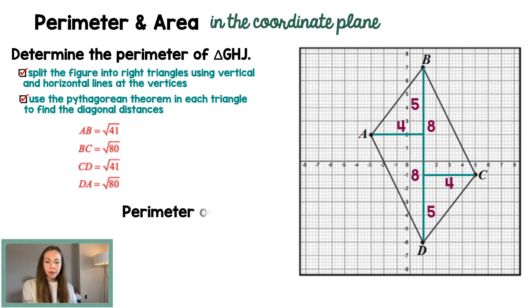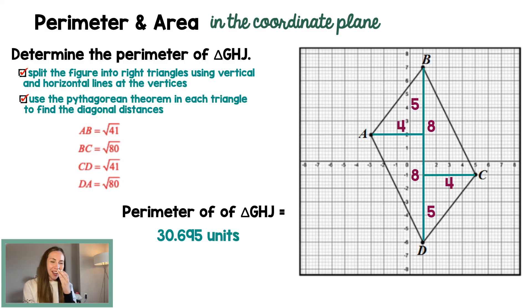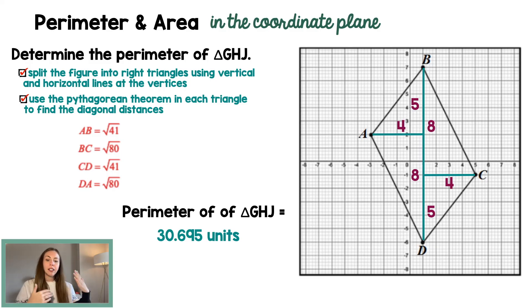So the perimeter is adding all of those up — you do want a decimal approximation here. The perimeter of quadrilateral ABCD is 30.695 units.